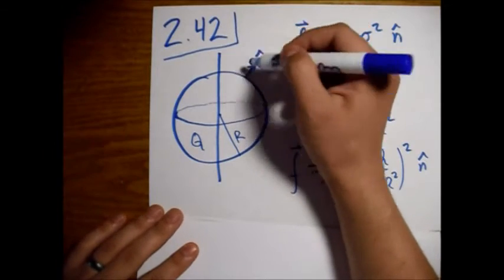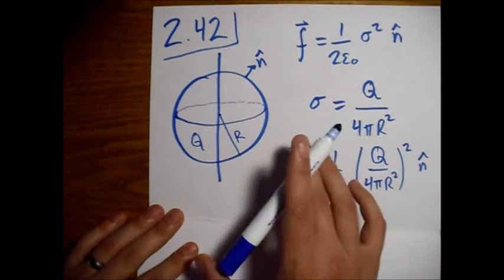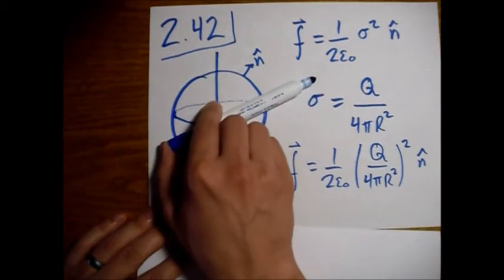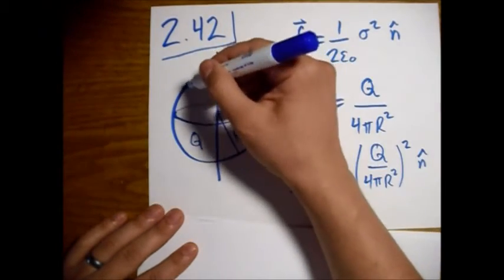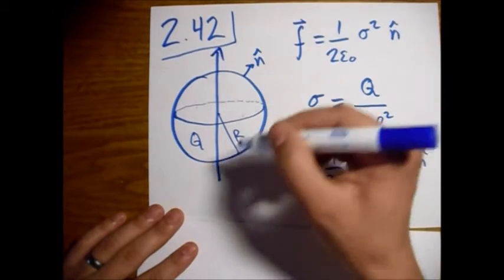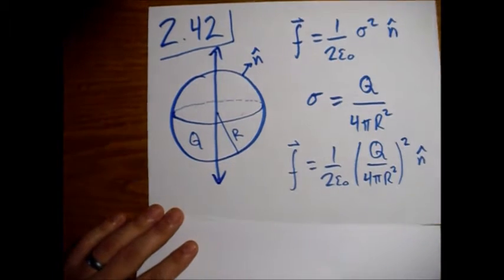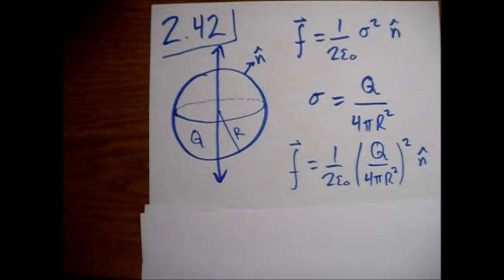Since we're dividing it into a northern hemisphere and a southern hemisphere, we're looking at just how much of this force, which is pointed outward in all directions, is going to be pointing up in the z direction, or down in the z direction if you're in the lower hemisphere.